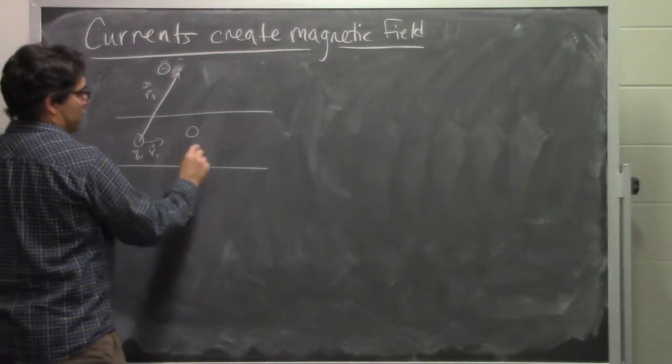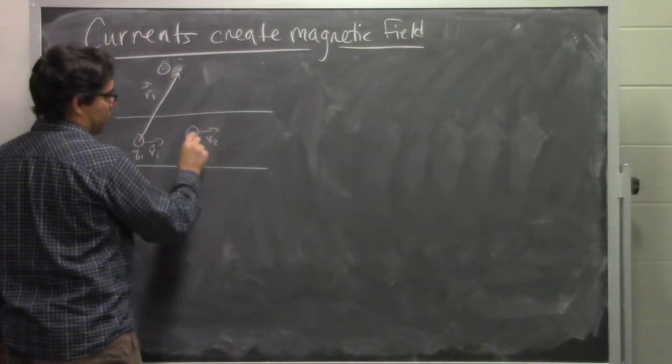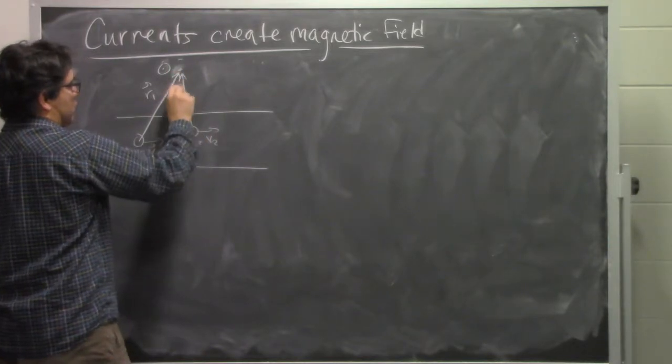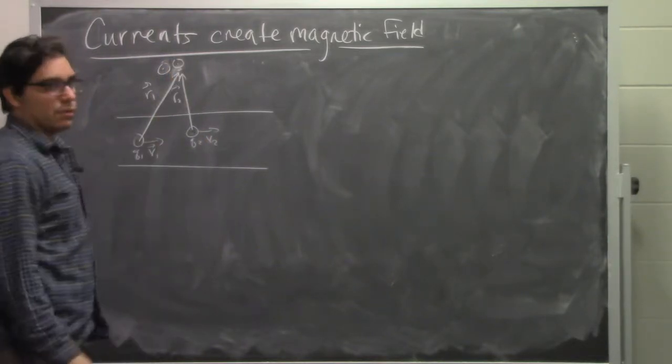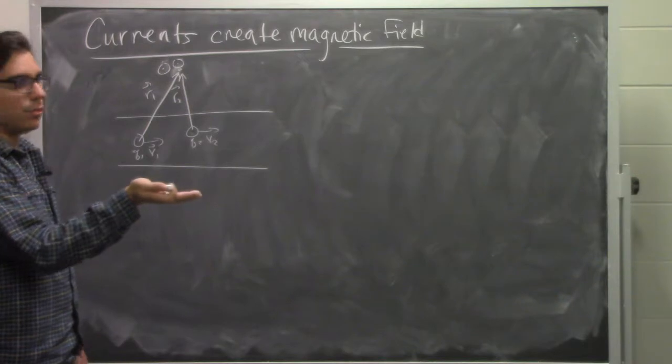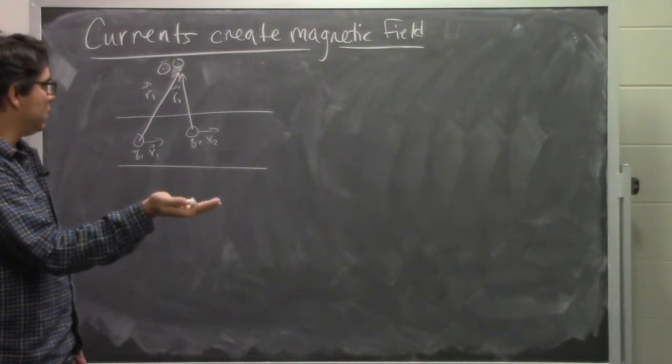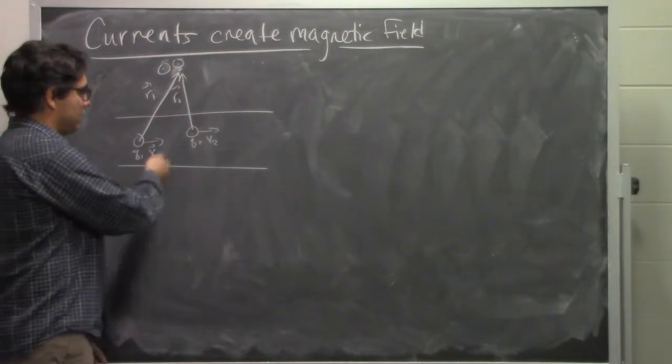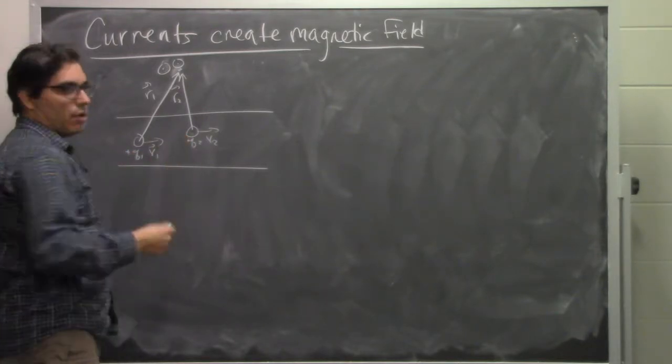If we look at another piece of charge moving with velocity V2 and charge Q2 with relative position vector R2, it also produces a magnetic field that points out of the board. If you use the right hand rule, point your fingers in the direction of V, curl in the direction of R. It's a positive charge, so they all point out of the board.